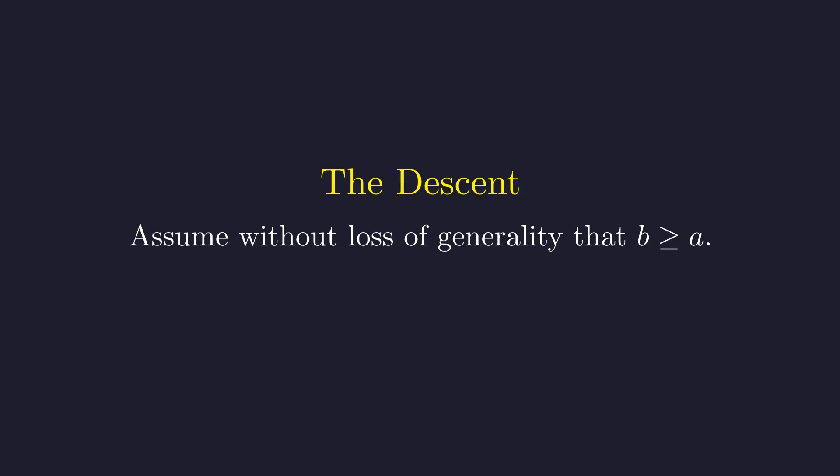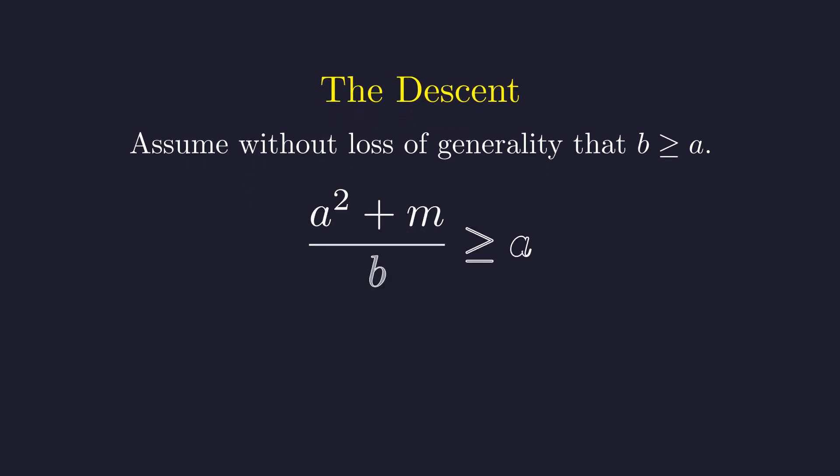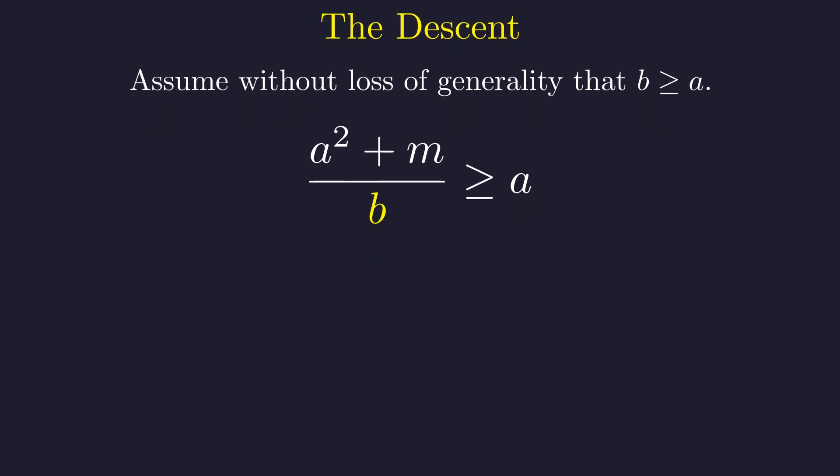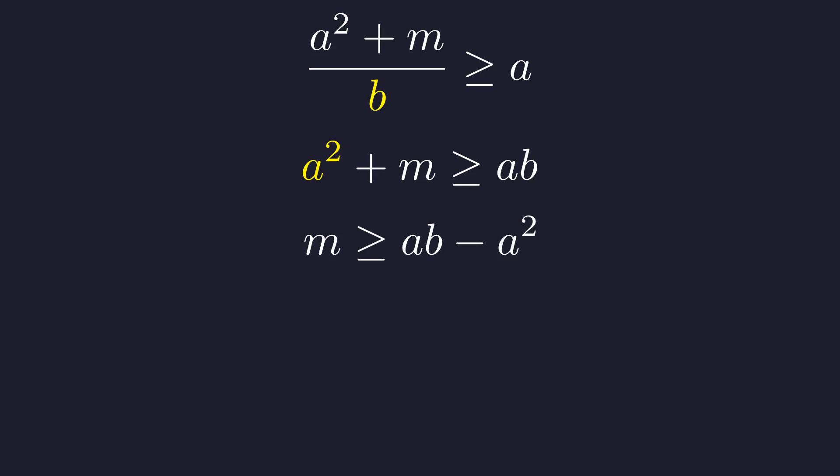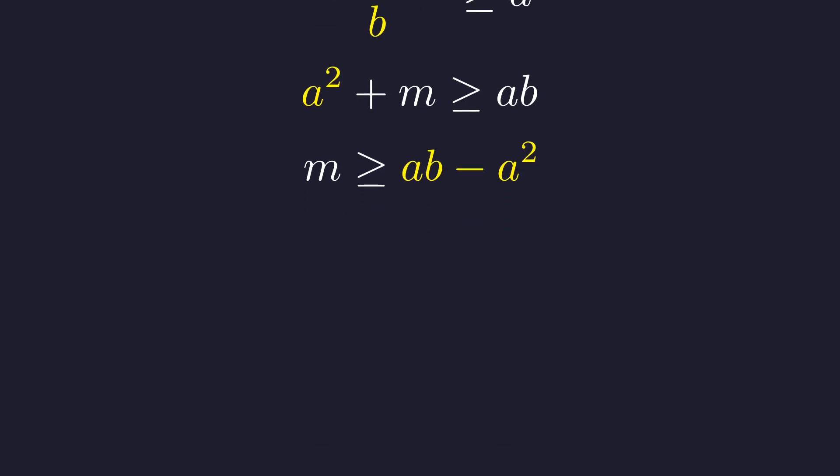Because the underlying equation for M is symmetric with respect to A and B, we can assume B is the larger of the two integers without loss of generality. Substituting our formula for B' into this assumption yields this inequality. To simplify, we clear the fraction by multiplying both sides by B. This gives us A squared plus M is greater than or equal to A times B. Next, we will substitute our original expression for M. To do so, we first isolate M. Subtracting A squared from both sides isolates M. Factoring the right side will be useful for a later cancellation. Factoring out A gives A times the quantity B minus A.